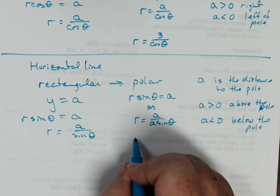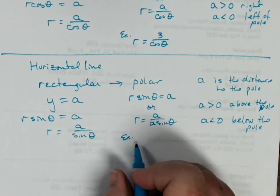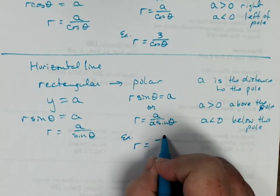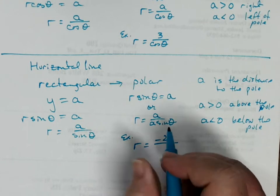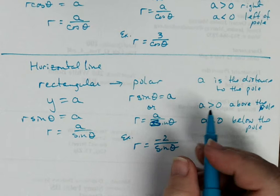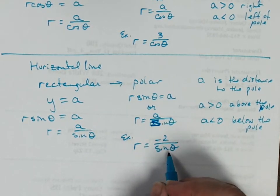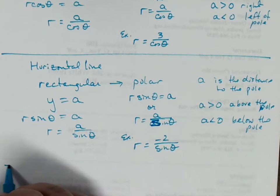An example equation - this was an example of vertical, an example of horizontal would be r equals negative 2 over sine of theta. a over sine of theta, negative 2 over sine of theta. So this particular line would be a horizontal line passing through 2 below the pole. We'll come back and graph those.